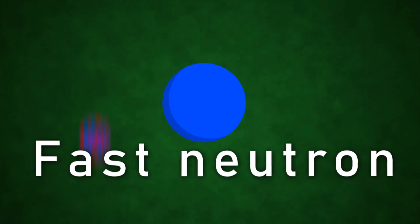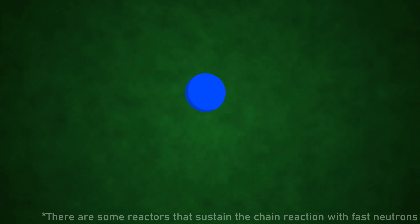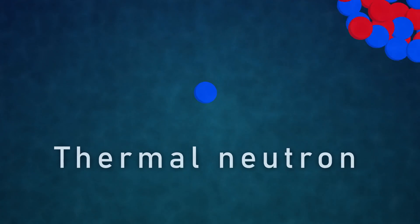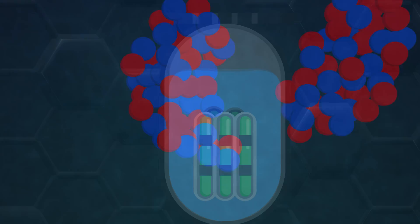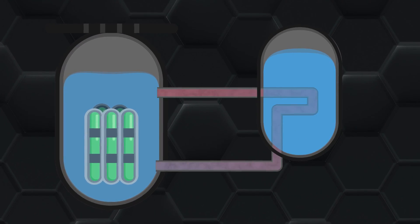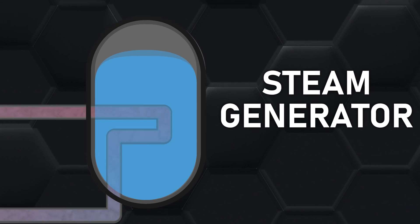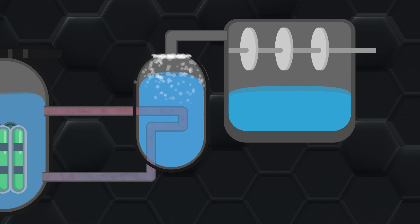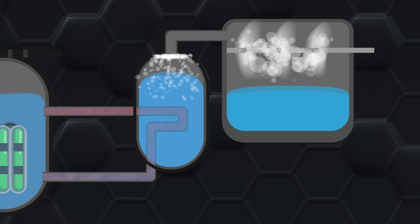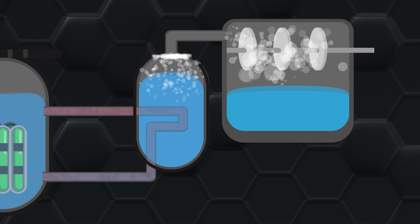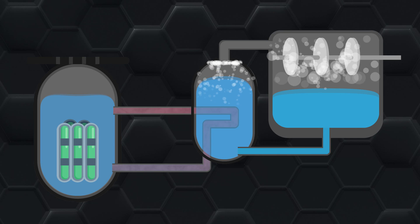Firstly, when neutrons are released from the nuclear chain reaction they are released with an immense velocity. These fast neutrons will just bounce around the chamber and are very unlikely to propagate the nuclear chain reaction because of quantum mechanics. A moderator slows down these neutrons, leaving them as thermal neutrons, which are far more likely to propagate the reaction. Secondly, the coolant allows us to circulate the heat outside of the core and into a steam generator, where steam is generated, turns a turbine, and creates electricity. The steam, now much colder, turns back into a liquid and is pumped back into the core where the whole process repeats.